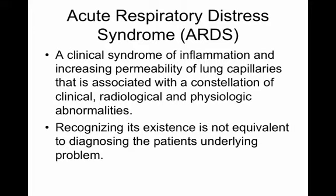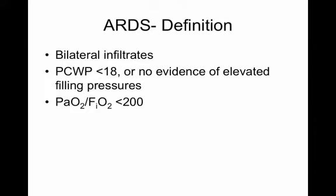That brings us to ARDS. ARDS is a syndrome—a collection of signs and symptoms—and diagnosing someone with ARDS is not the same as identifying the underlying problem. The definition includes bilateral infiltrates, a low wedge pressure (or no evidence of volume overload if not measuring), and a PF ratio under 200. So: hypoxemic, bilateral infiltrates, no elevated filling pressures. Recognize that for all the trials done in ARDS, you could technically have a right upper lobe pneumonia and left lower lobe collapse meeting these criteria—and even people who run ARDS trials can't totally agree on what is and isn't ARDS.